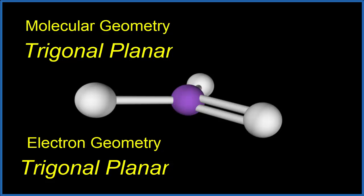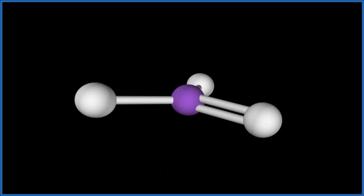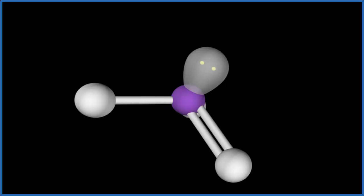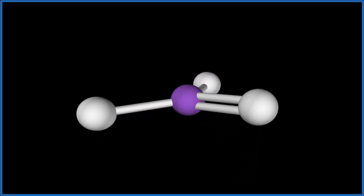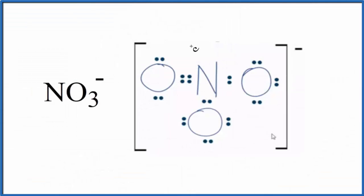If we added lone pairs, that would really change the geometry. If we put a lone pair here, you can see how it forces everything down. But since we don't have lone pairs, the electron geometry and the molecular geometry are both trigonal planar.